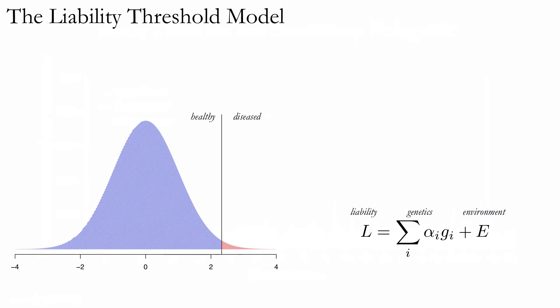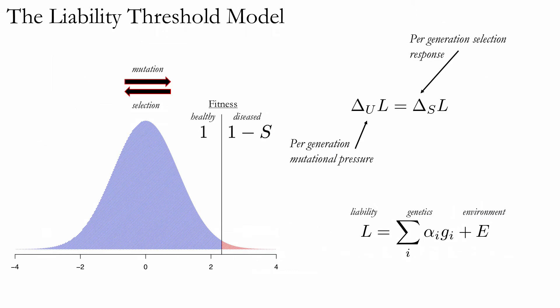We can turn this into an evolutionary model with a few additional assumptions. Namely, we assume a mutational bias which pushes the population towards the threshold by a small amount every generation, and that this is balanced by a selection response due to the decreased evolutionary fitness of those individuals past the threshold who get the disease. As long as the disease is sufficiently polygenic, these forces will dominate drift at the level of the phenotype, and the disease prevalence will remain approximately constant, so long as nothing in the environment changes.